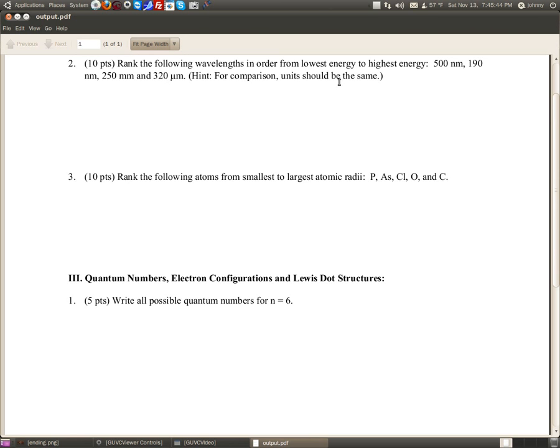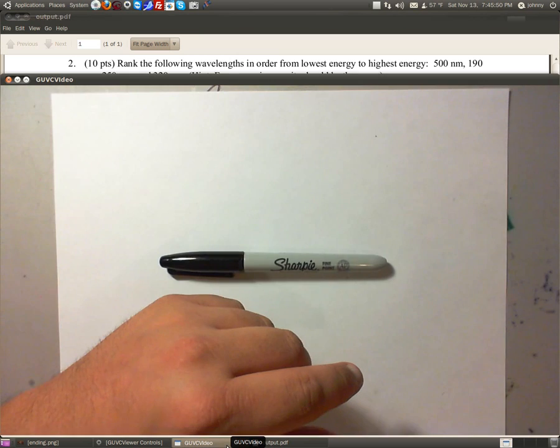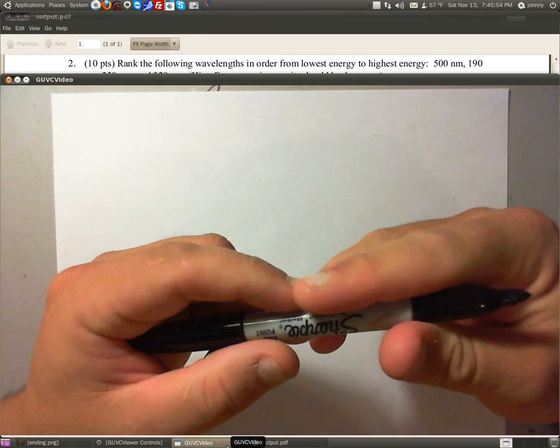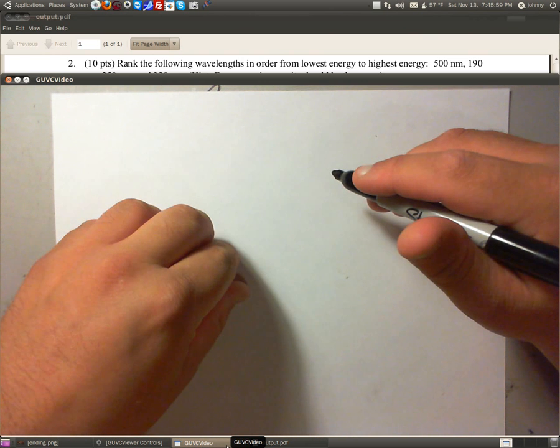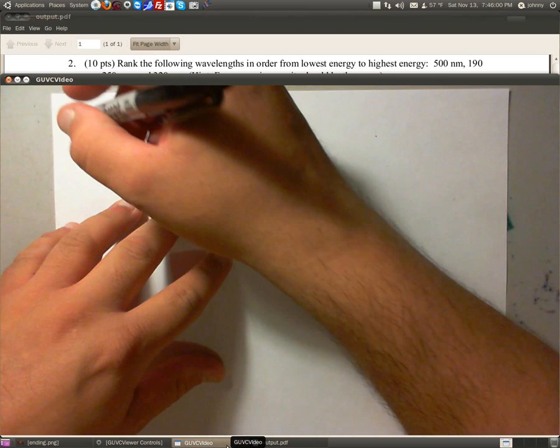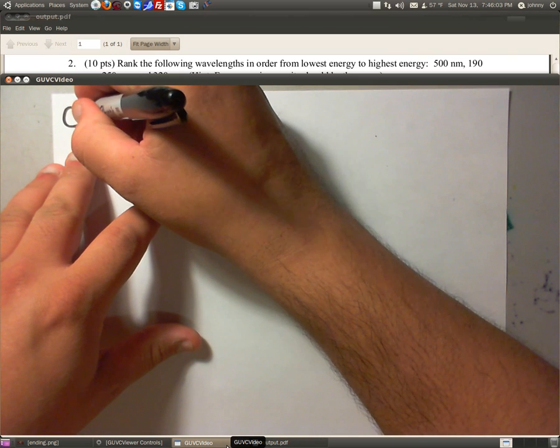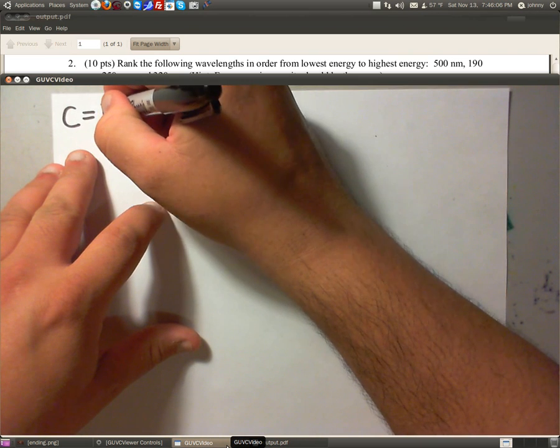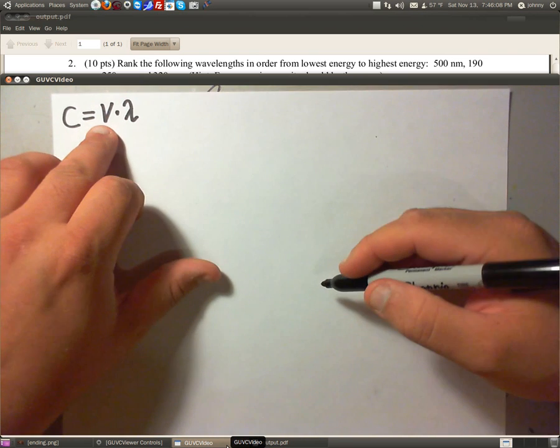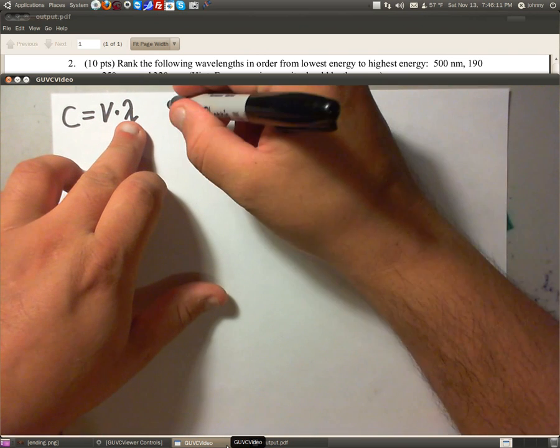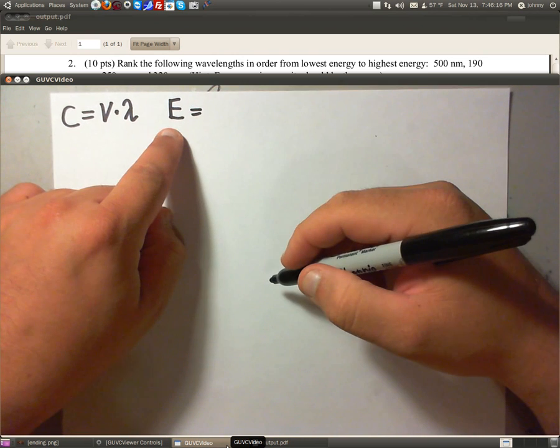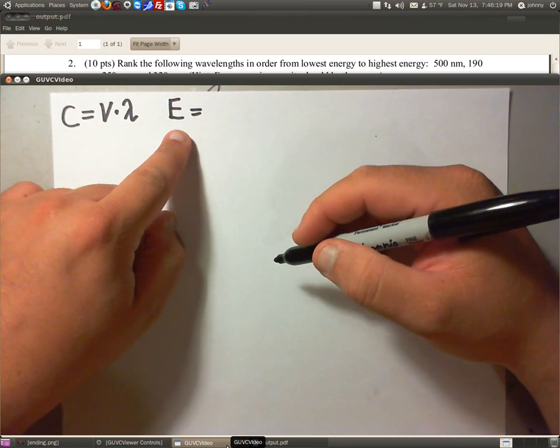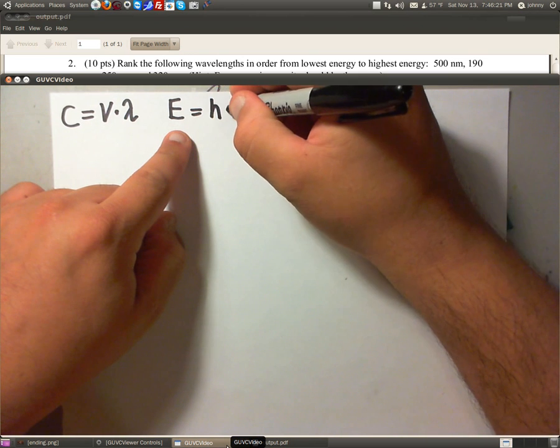Before we can get started on this problem, we need some background information. So let me pull up the webcam. Now, in order to do this problem correctly, involving these wavelengths and involving energy, we need two equations that we need to look at. One of them is the speed of light equation that deals with frequency and wavelength. Remember this V stands for frequency, lambda stands for wavelength. The other one is energy of a photon of light, so energy is equal to Planck's constant times V.